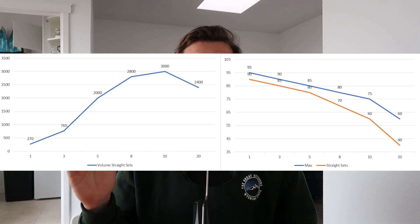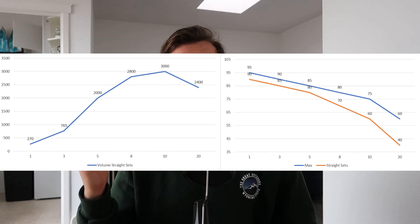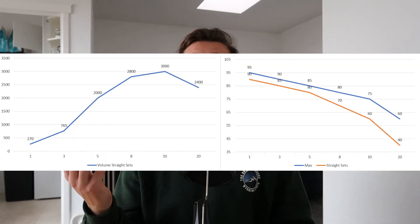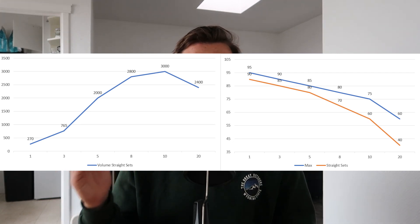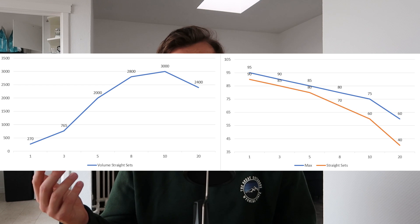Singles and triples are your strength rep ranges — volume is a lot lower but intensity is a lot higher to get the neurological adaptations from strength training. However, it's much harder to accumulate training volume in those ranges, as you can see in this graph. Moving to sets of 8 and sets of 10, volume is a lot higher but intensity has to drop a lot to account for accumulated fatigue, which is why these ranges are prescribed for hypertrophy work.